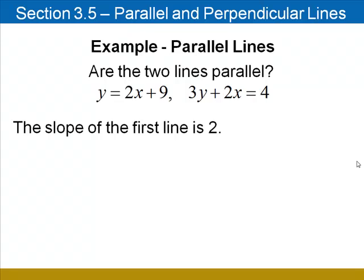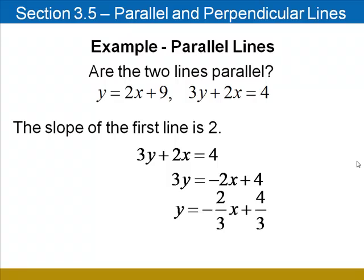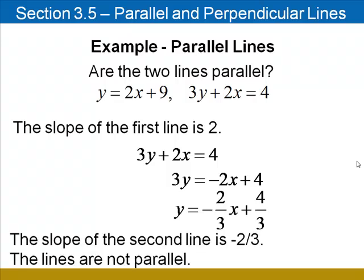To find the slope of the second line, we will have to solve the equation for y in terms of x. Begin by subtracting 2x from both sides. Now divide both sides of the equation by 3. We find that the slope of the second line is negative 2 thirds. These two lines are not parallel because the slopes of parallel lines have to be identical and 2 is not equal to negative 2 thirds.